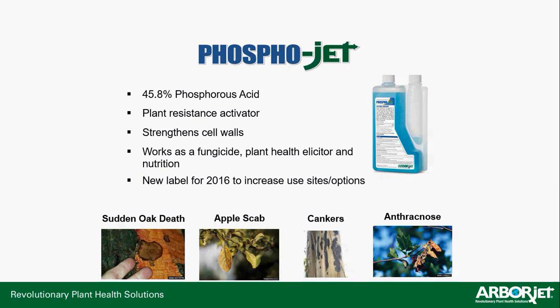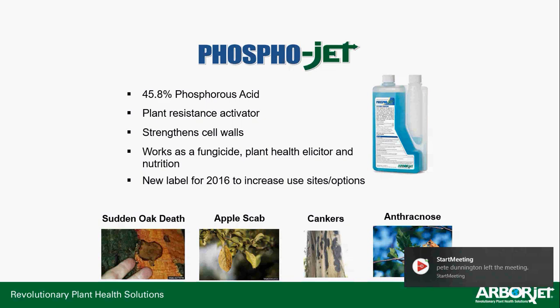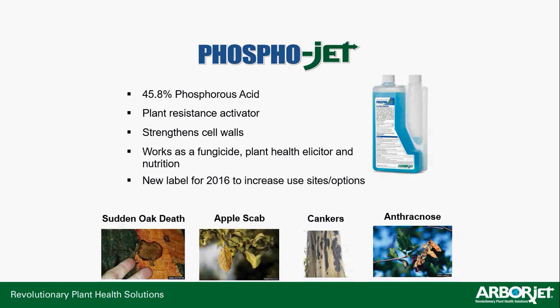PhosphoJet contains 45.8% phosphorous acid. It does a lot of things — it really helps strengthen cell walls, it works as a fungicide, and it helps the plant release its own chemicals to help control diseases. We now have a new label allowing foliar spray application as well, so it's not just an injectable product anymore. It also does a great job on hypoxylon canker and anthracnose, and we see great results in all plant material, especially palms. Whenever you drill into a palm for any application, I always say put some PhosphoJet in there — it will be very beneficial given all the stresses palms face.